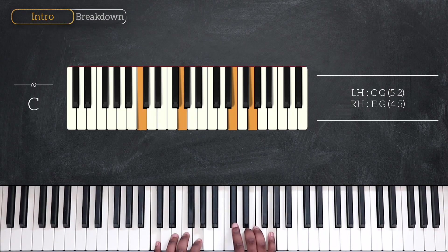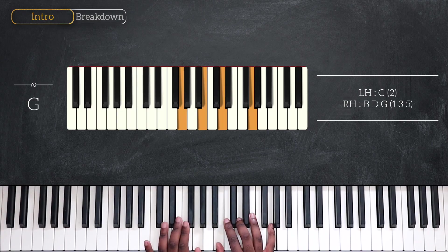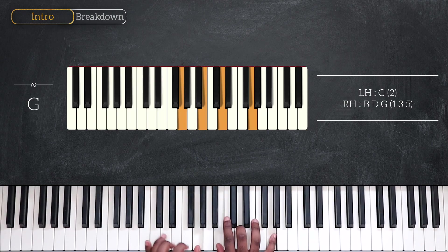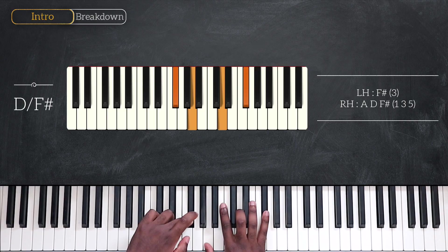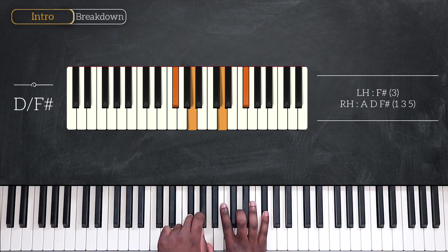Going up on G major, the one chord. G on the left, then B, D and G. And the very last chord we're going to use here is this one, D over F sharp. F sharp on the left, A, D and F sharp on the right hand.